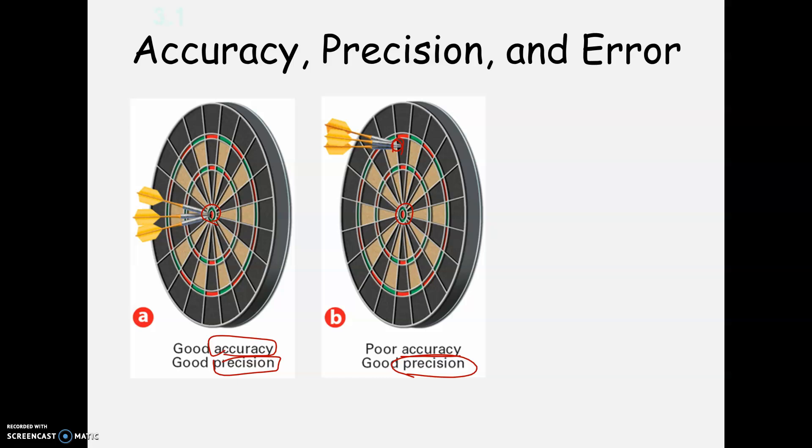Now somebody did ask me in class, could we have the opposite of this? Could we have good accuracy and poor precision? And that's kind of tricky, actually, to have because if we have good accuracy, then that would mean that we're hitting the target. And so then how could your precision really be bad? So what I said was, I don't think we would do that to you on a test anyway.